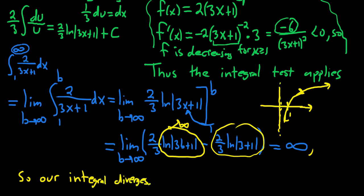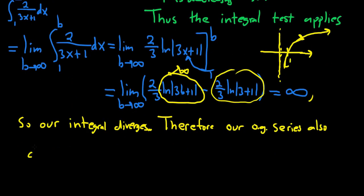So our integral diverges. So what does this mean? This means that our original series also diverges by the integral test. So therefore, our original series, I'll just say OG (original series), also diverges by the integral test.